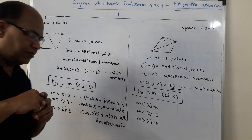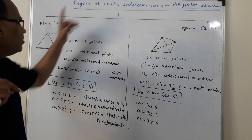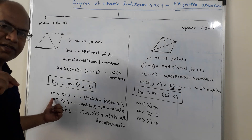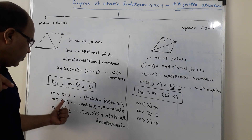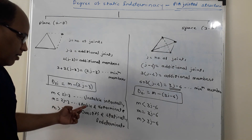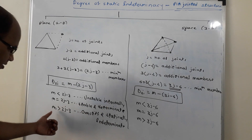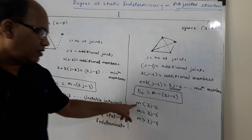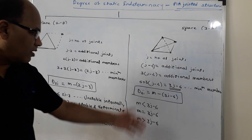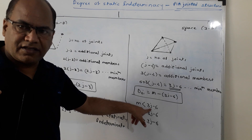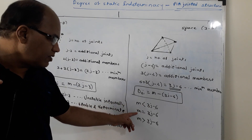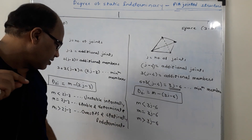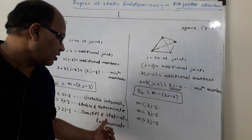If m is less than 2j − 3 in a plain pin-jointed structure, the structure is unstable internally. If m equals the minimum number of members required, the structure is stable and statically determinate. If m is greater than 2j − 3, the structure is over-stiff and statically indeterminate. Similar conclusions apply to space structures using 3j − 6 as the threshold.